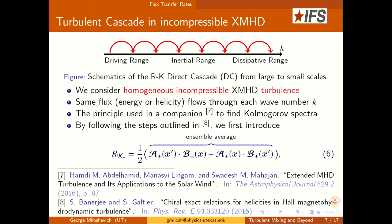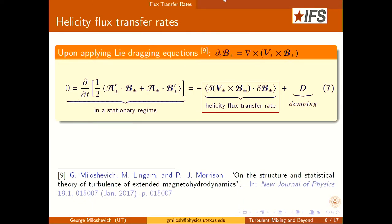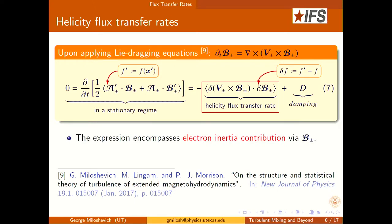The first question we are asking is: we want to find the dissipation rates of the helicities. We are following in the steps outlined by Banerjee and Galtier, who did this calculation for Hall MHD, but we are doing the same calculation for extended MHD. You work with two-point correlation functions where X-prime is evaluated displaced by R from X, and the brackets denote the ensemble average. Applying the Lie-dragging equations, you can show that in a stationary regime this evolution equation equals zero, and therefore the helicity flux transfer rate should equal the phenomenological damping term we add.